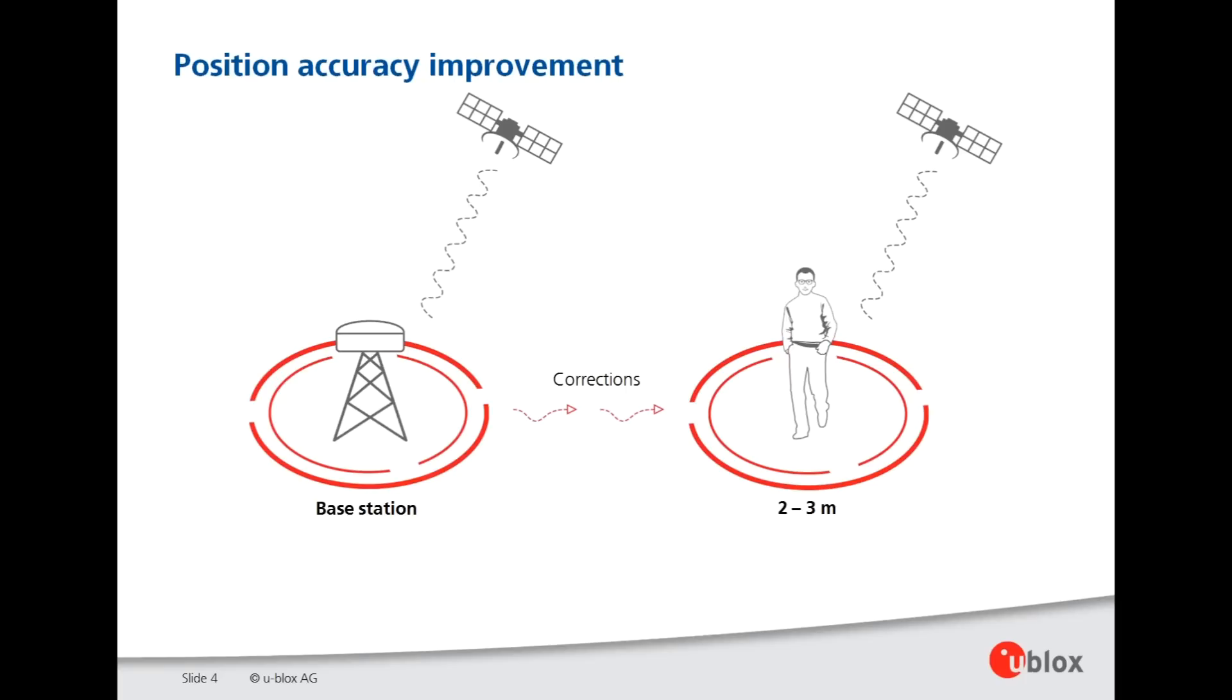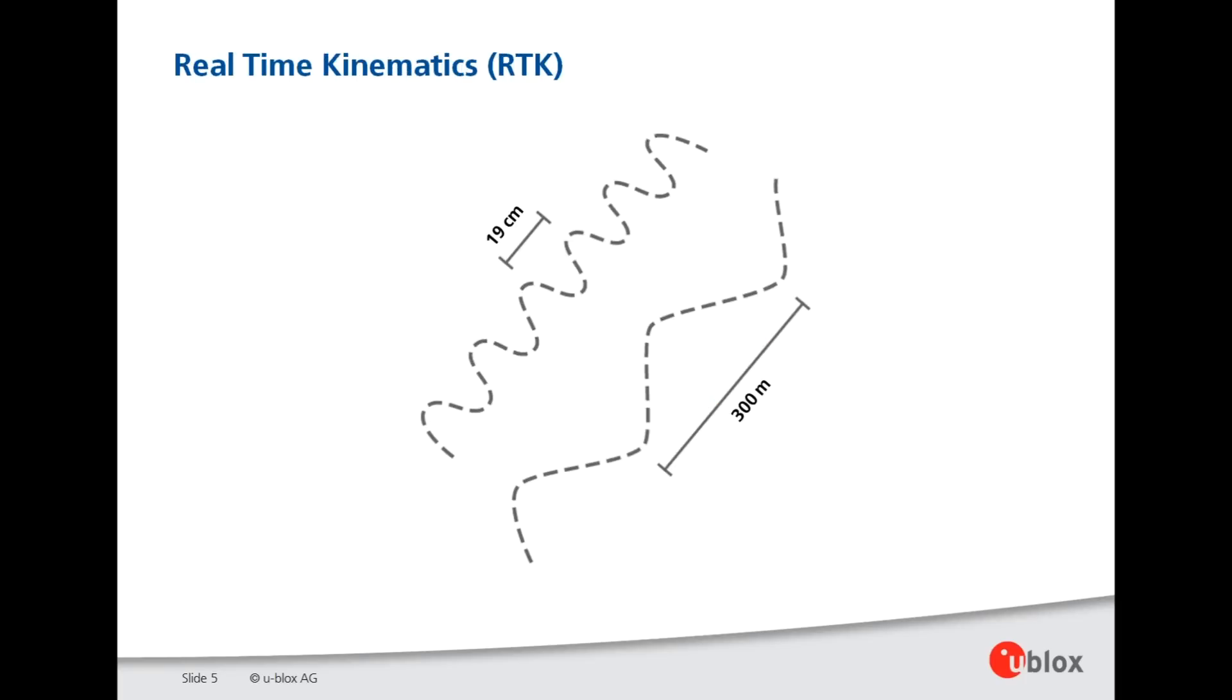The next step takes place inside the receiver where we turn to measurements of the signal's carrier wave. Now the wavelength of the GPS L1 carrier wave is only 19 centimeters, and you can compare this to the almost 300 meters wavelength in the GPS L1 C/A code signal. You can see that this allows for very precise measurements.